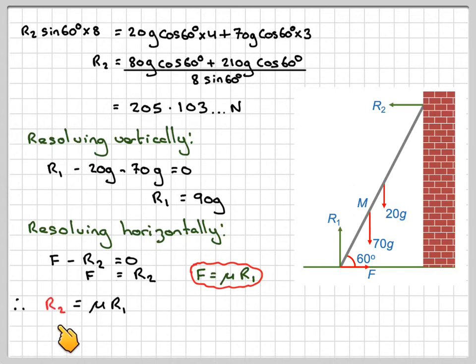So, therefore, R2 will be mu R1 because we know that F is equal to R2. So, R2 is equal to mu times R1, which means that mu will be equal to R2 divided by R1. Now, R2 is 205.103. So, don't round this off prematurely. Divided by 90G. If we do that on our calculator, it gives me 0.2325. And therefore, I get a final answer of 0.233.